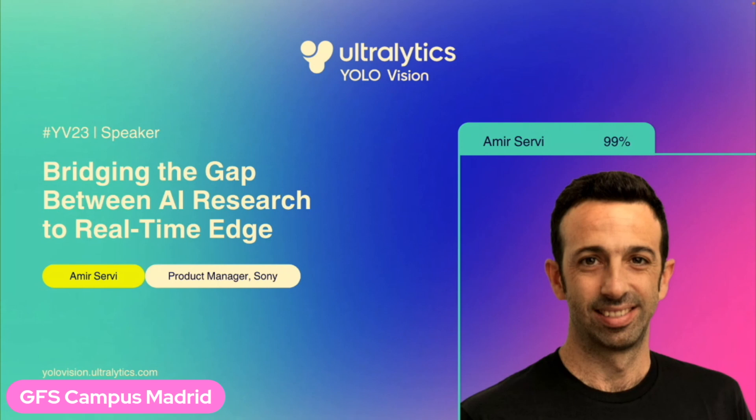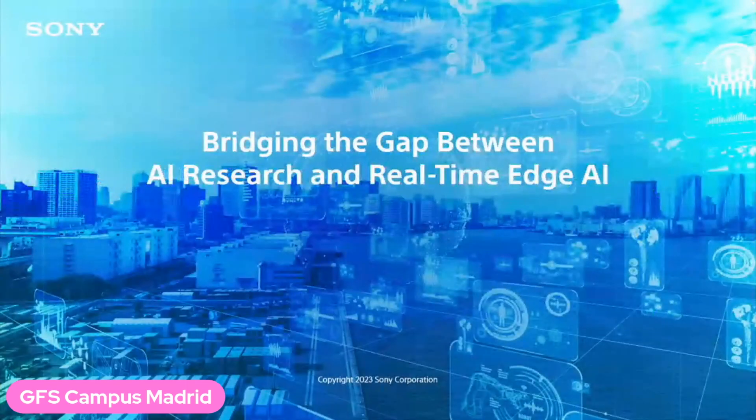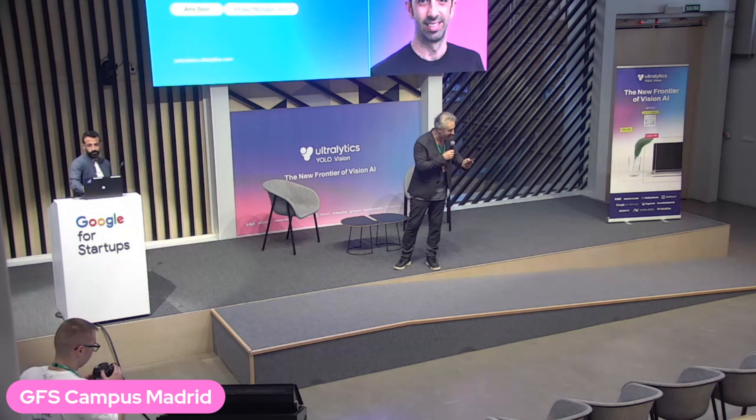As we know, AI is reshaping industries and functionalities across the board. Yet the challenge lies in making AI operate efficiently on end-user devices within strict power and thermal limits. This is where Amir's expertise truly shines. He's going to walk us through Sony's model compression toolkit, revealing the secrets behind quantizing and accelerating deep learning models for efficient edge deployment.